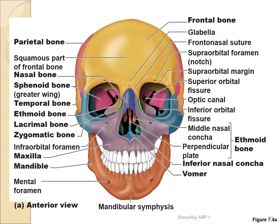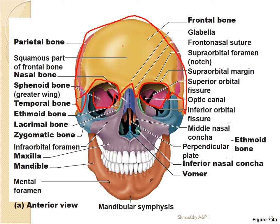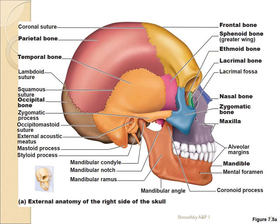Now we're looking at the skull from the frontal view, with the bones nicely colored for study. The cranial bones or calvarium include the frontal, parietal — which you don't always see in narrow-headed skulls — and the temporal. We can look inside and see the sphenoid. From the side, the cranial bones extend around to include the occipital.